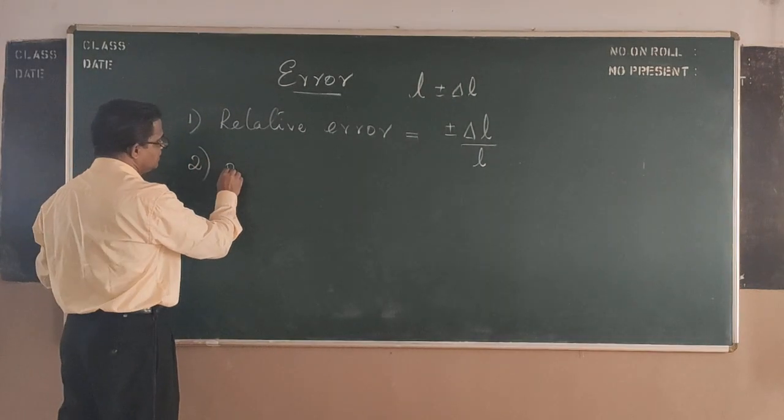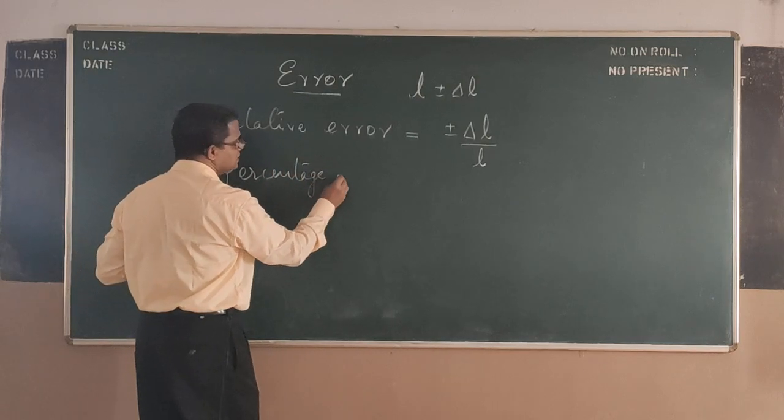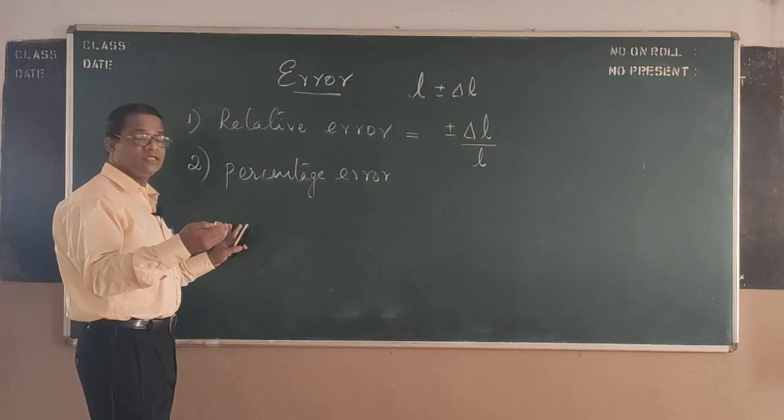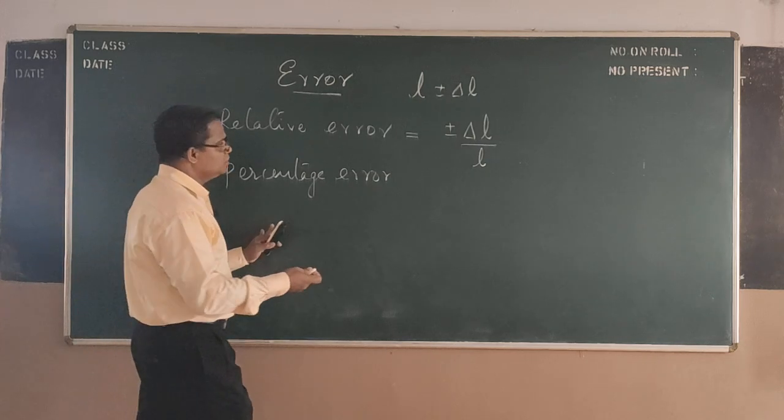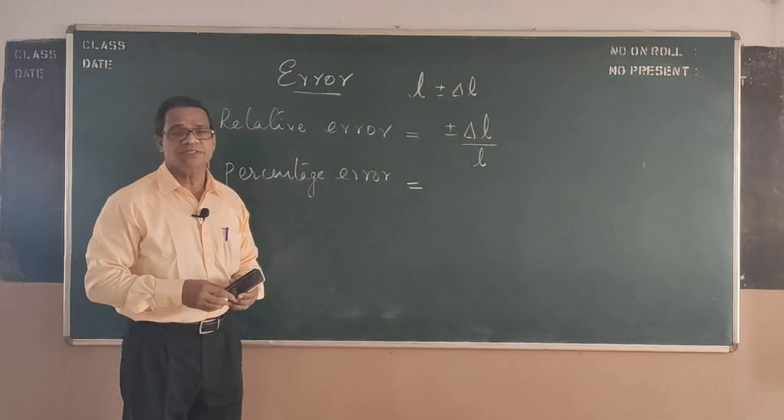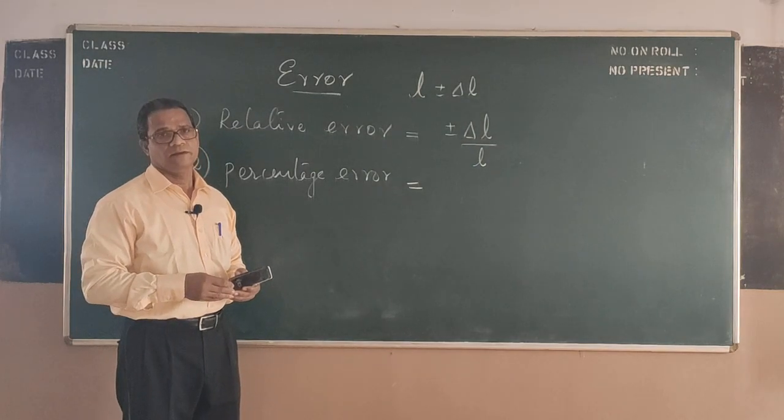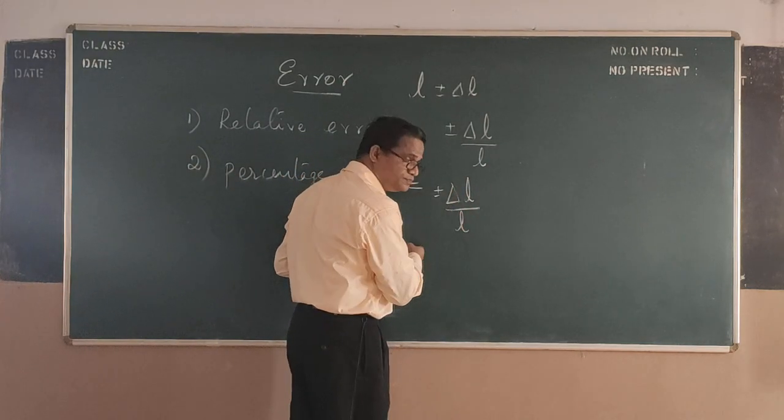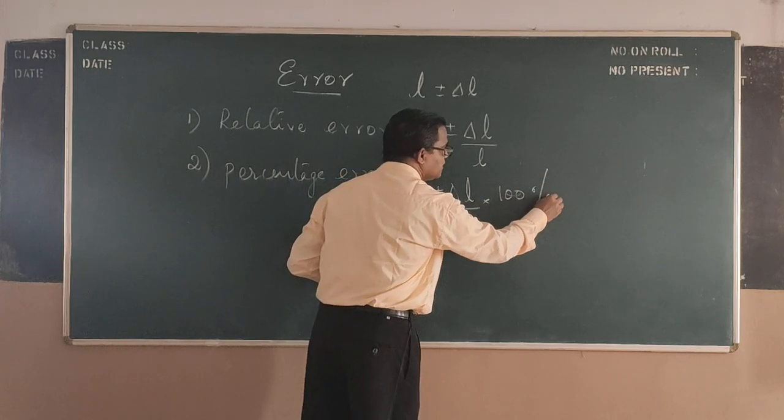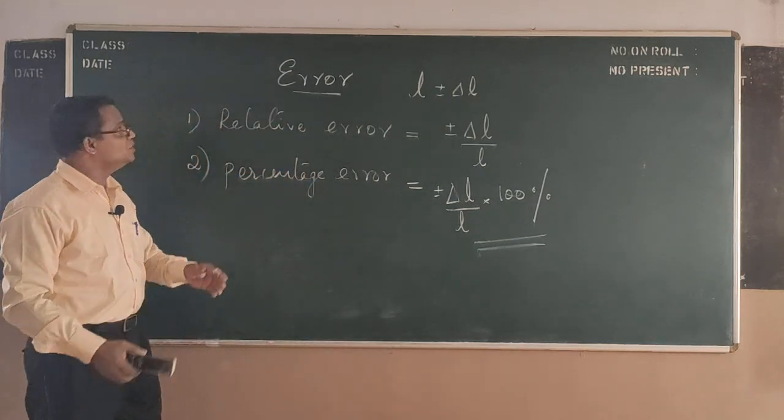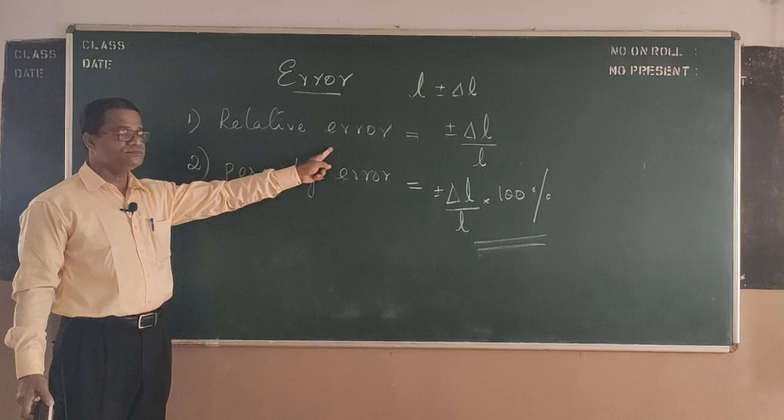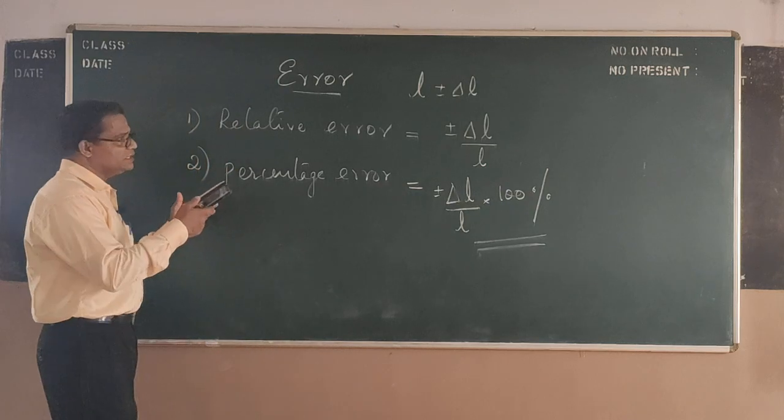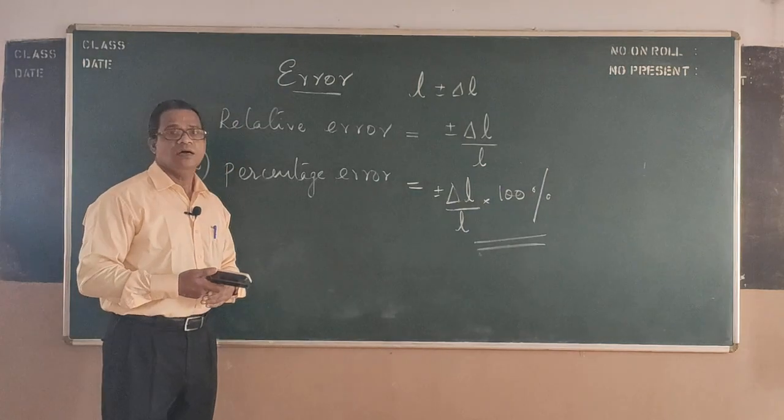The second one is percentage error. Percentage means out of 100. So percentage error is nothing but the error expressed in percentage, out of 100. That will be equal to delta L by L into 100. This automatically becomes percentage error. These are the three quantities or three terms you are supposed to understand relating to error.